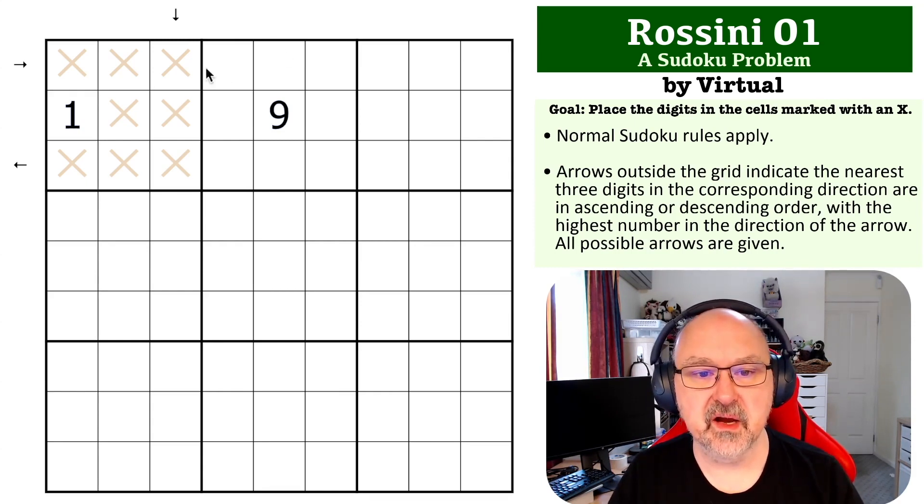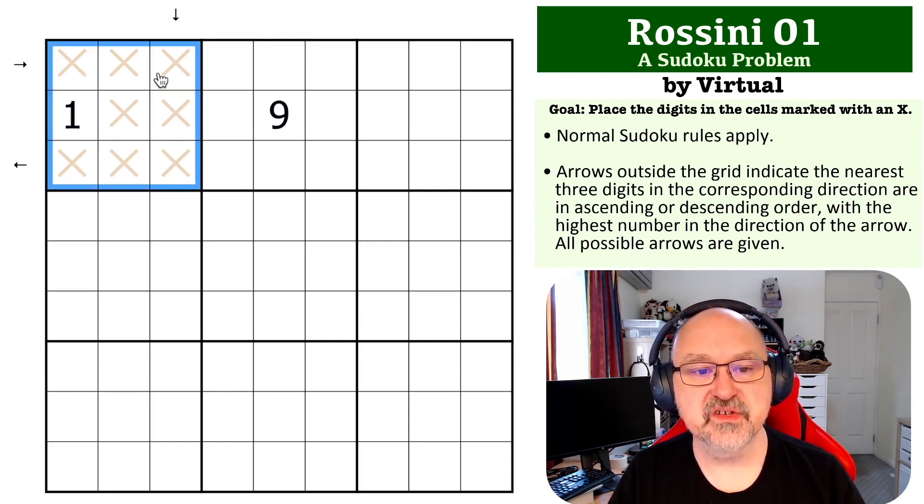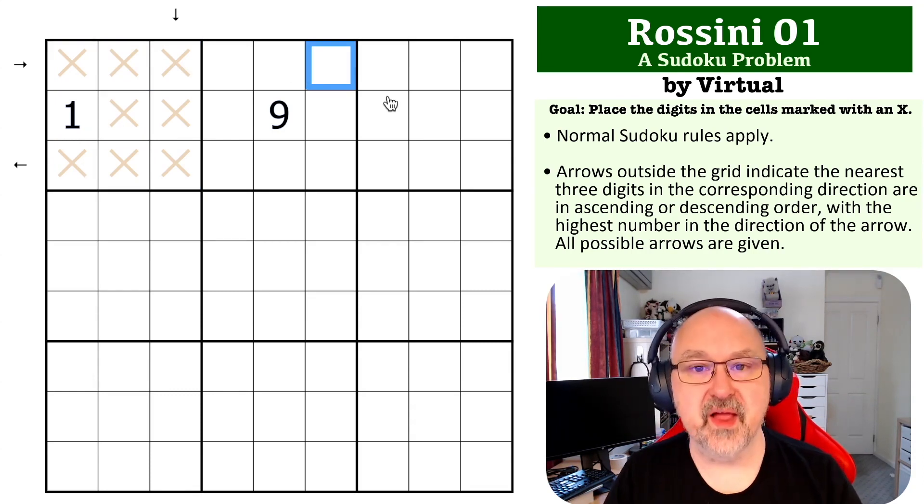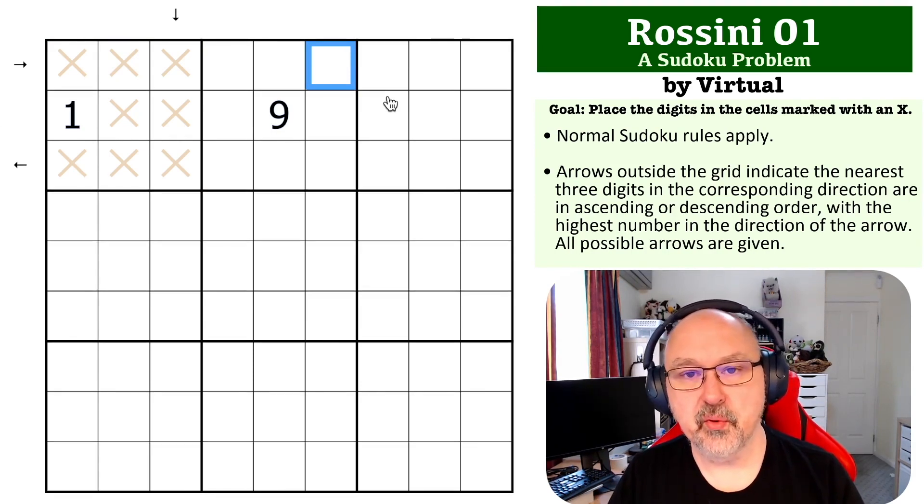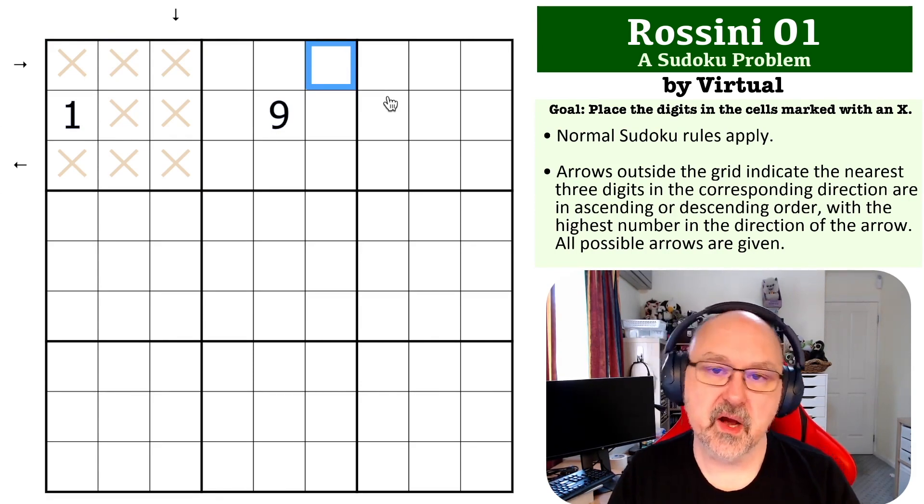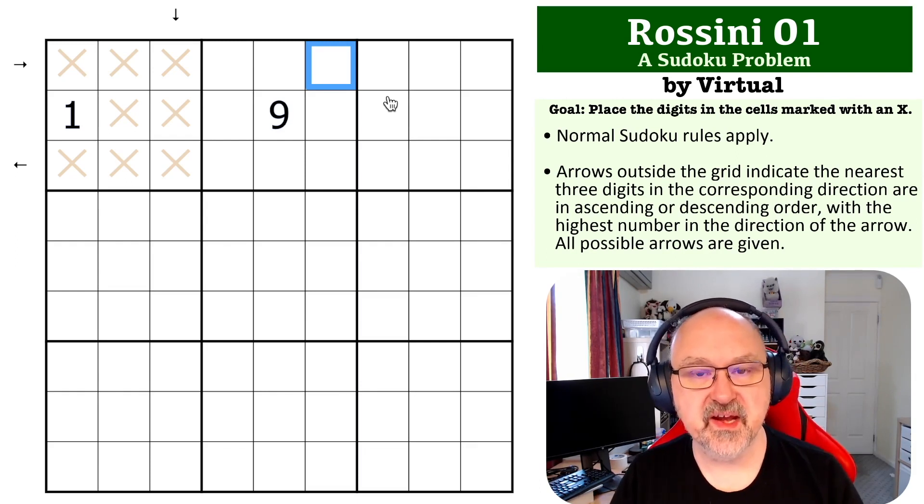This is referring to around the digits around box one. So around this box, all arrows are given. So they're the rules. There is a link to this grid below, so you can pause the video if you wish to give it a shot, and I will be back in a few seconds to explain how this one works.